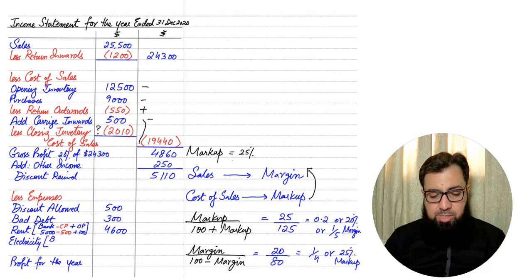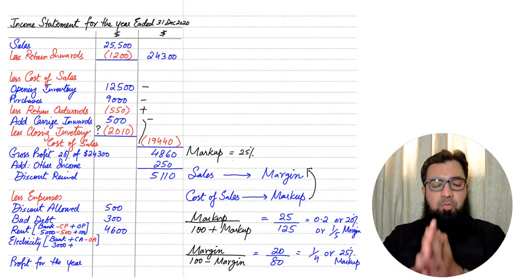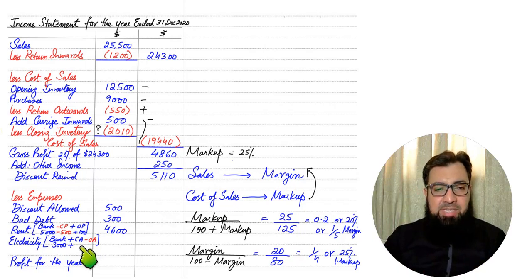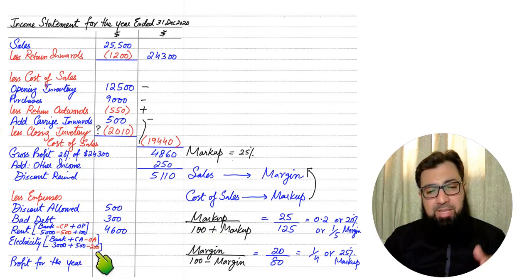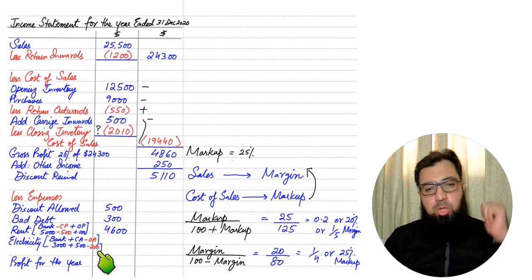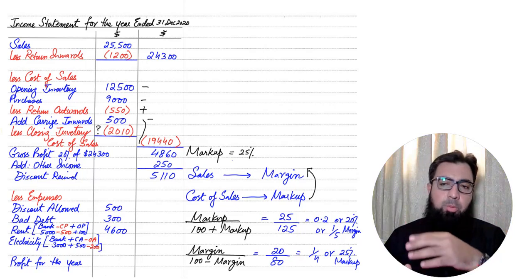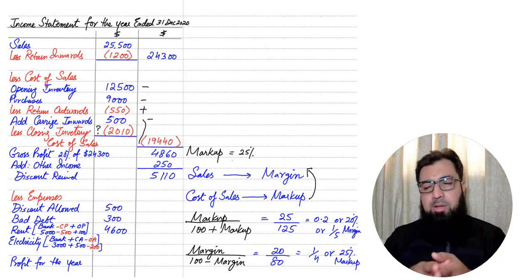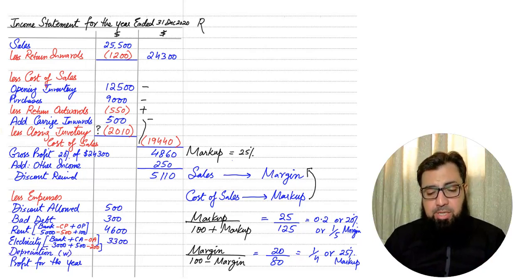For electricity, if we have paid 3,000, we add closing accruals because we have used electricity but not yet paid that bill. Opening accruals are deducted because that bill was paid but belongs to the previous year. To summarize: closing accrued is added, opening accrued is deducted; closing prepaid is deducted, opening prepaid is added.